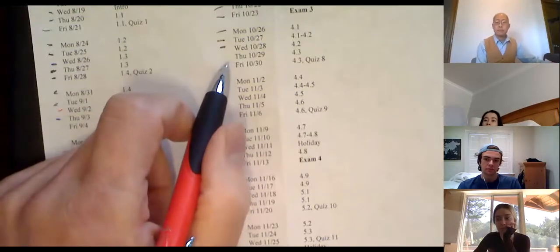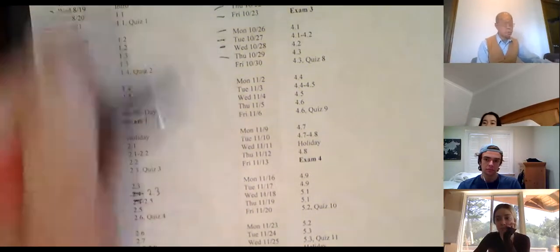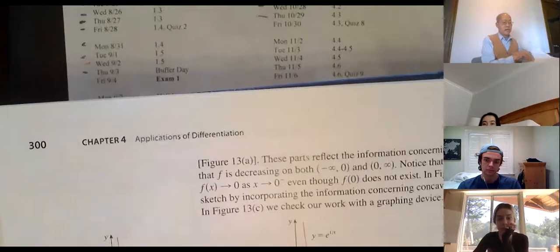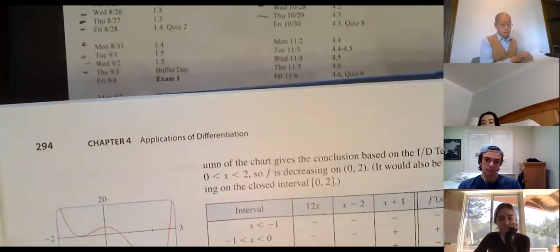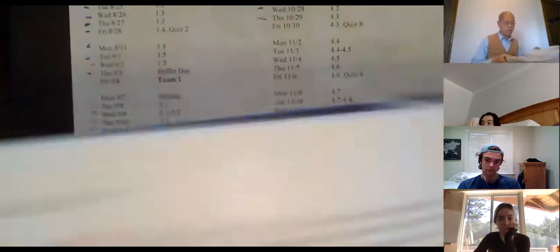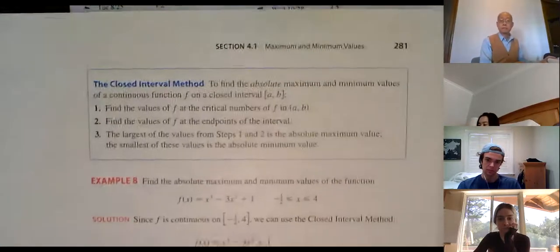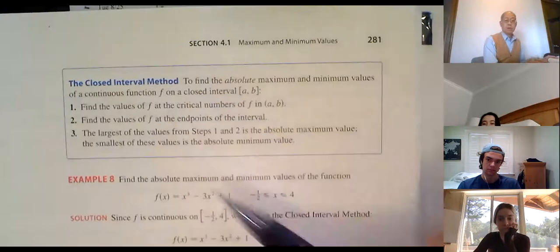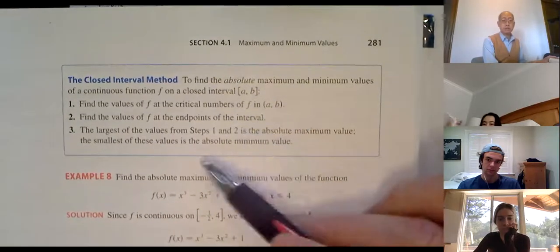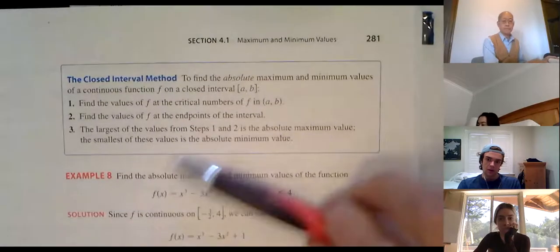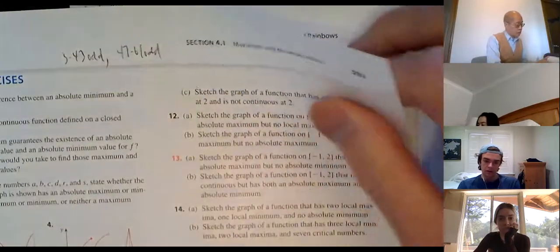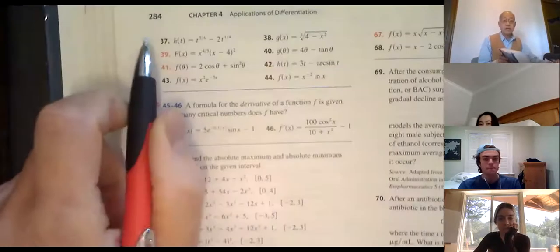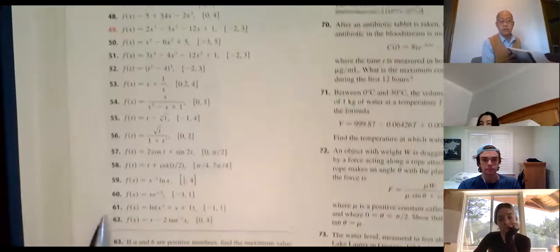We're continuing on section 4.3. Quiz tomorrow will be finding maximum and minimum on a closed interval — that's the closed interval method from section 4.1. What I'll give you on the quiz is from page 281: find the absolute max and min on a closed interval. Similar questions are on page 284, problems 47 through 61.